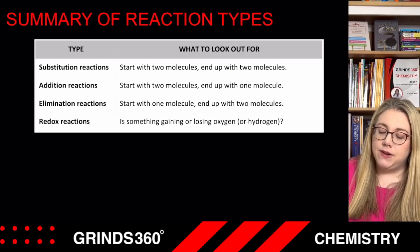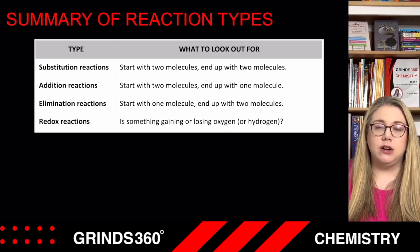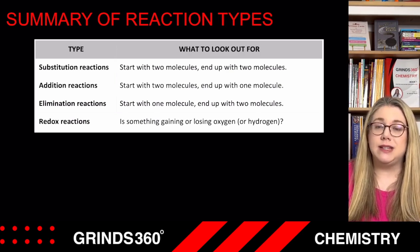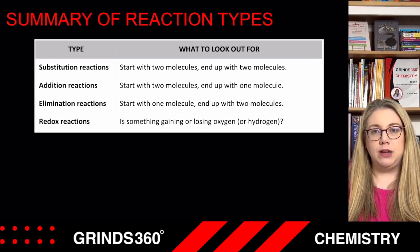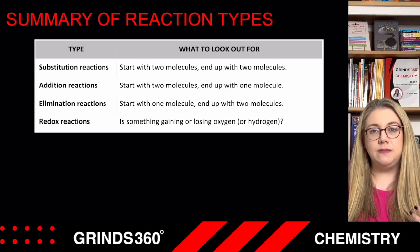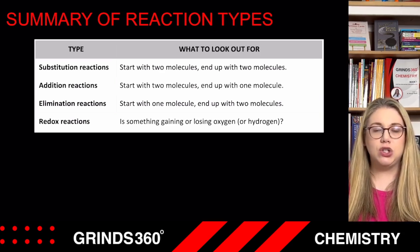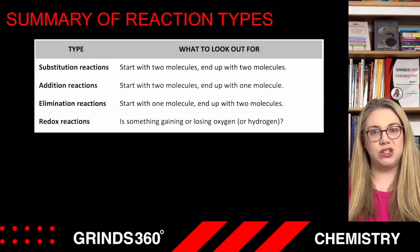The first type is substitution. This is where you start with two molecules and you end up with two molecules — the same number on each side of the equation, just rearranged or attached differently.